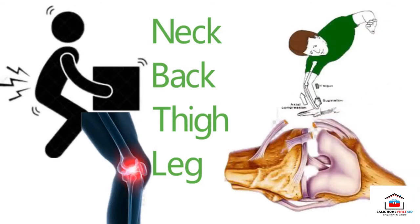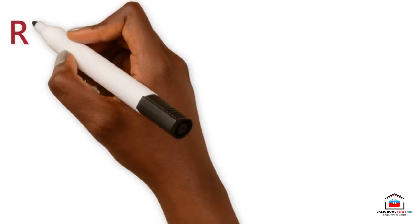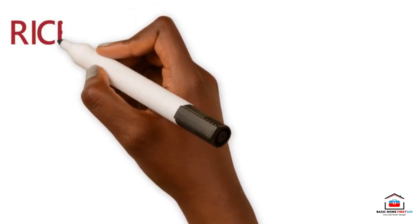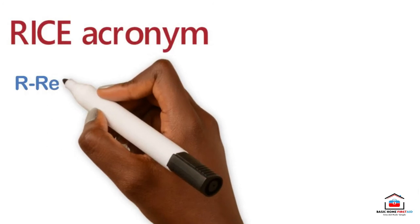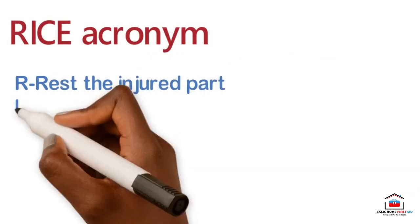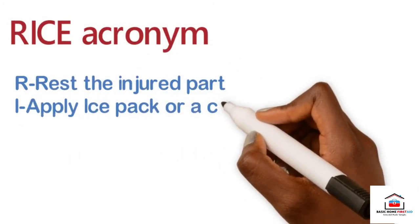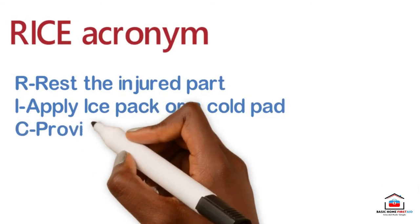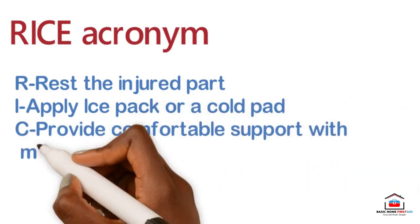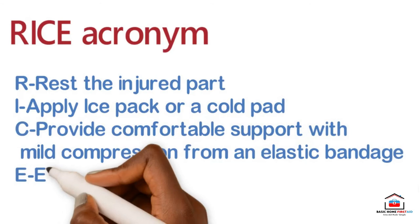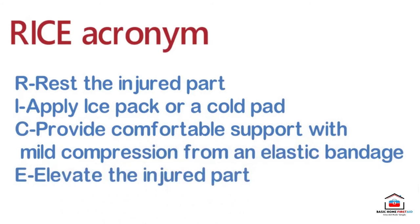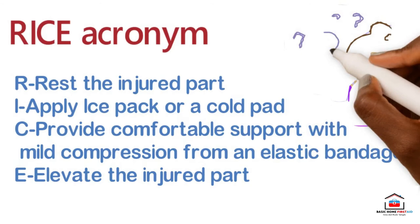Strains and sprains should be treated initially by the RICE acronym, where R stands for Rest the injured part, I means apply an ice pack or cold pack, C means provide comfortable support with mild compression from an elastic bandage, and E means Elevate the injured part. This procedure may be sufficient to relieve the symptoms, but if you are in doubt, treat it as a fracture.